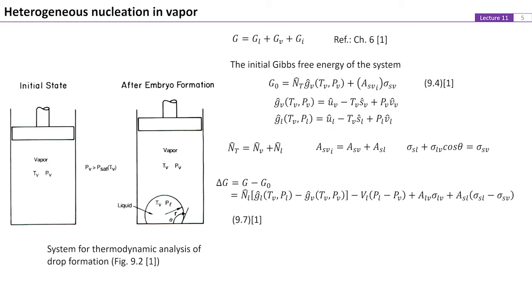Considering a system of fluid contained in a cylinder, initially the temperature and pressure are at Tv and Pv, respectively. The pressure of the vapor Pv is lower than the saturation pressure corresponding to Tv, so the vapor is supersaturated. The initial free energy of the system is given by equation 4, where Nt is the total number of moles in the system and Gv is the free energy per mole of the vapor phase.